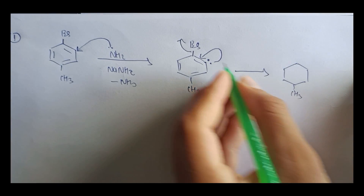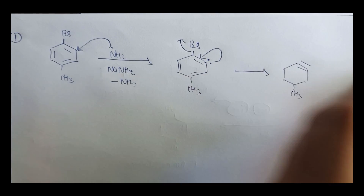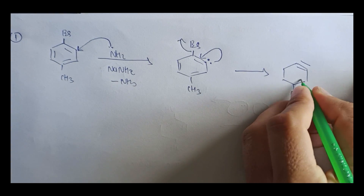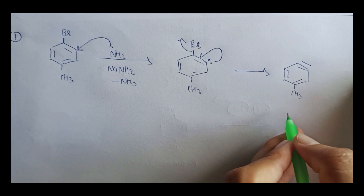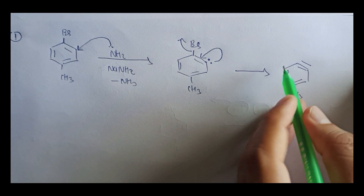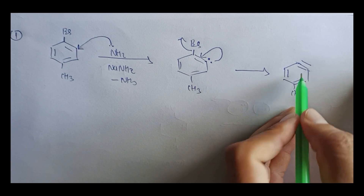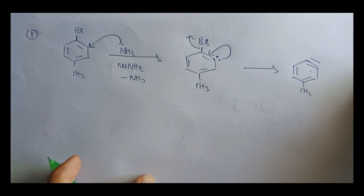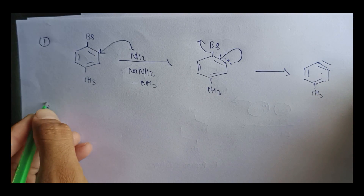After bromine is removed, the electrons participate to form a triple bond between the two carbons, giving the Benzyne (toluene-benzyne) intermediate. The carbon-carbon triple bond is the Benzyne structure. Therefore this is called the Benzyne Mechanism. This is the first step: the bromine group is eliminated.